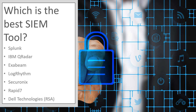Which is the best SIEM tool? The best SIEM tools according to Gartner are Splunk, IBM QRadar, Exabeam, LogRhythm, Securonix, Rapid7, and Dell Technologies RSA, to name a few. These SIEM tools tend to be classed as leaders in the Gartner Magic Quadrant released each year.